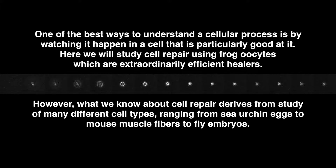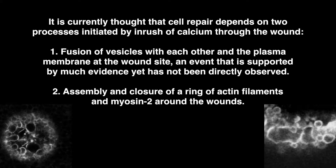One of the best ways to understand a cellular process is by watching it happen in a cell that is particularly good at it. Here we will study cell repair using frog oocytes, which are extraordinarily efficient healers. However, what we know about cell repair derives from study of many different cell types, ranging from sea urchin eggs to mouse muscle fibers to fly embryos. It is currently thought that cell repair depends on two processes initiated by an in-rush of calcium through the wound: first, fusion of vesicles with each other and the plasma membrane at the wound site — an event supported by much evidence yet not directly observed; second, assembly and enclosure of a ring of actin filaments and myosin around the wound.